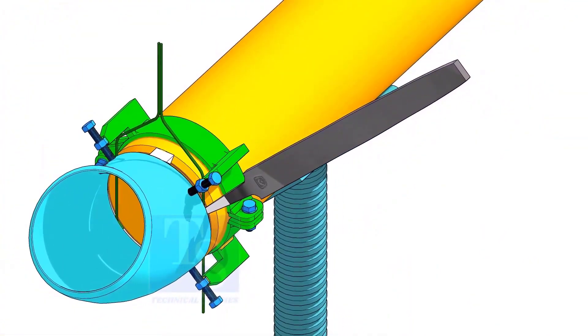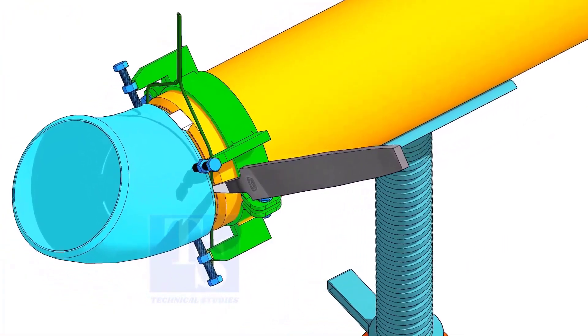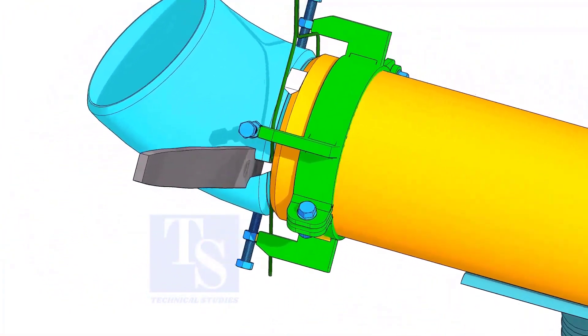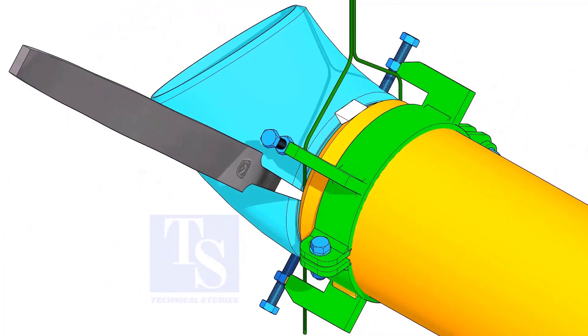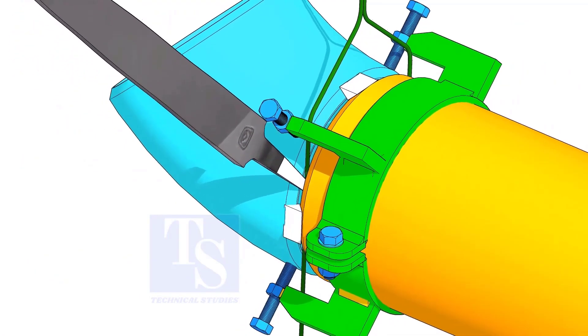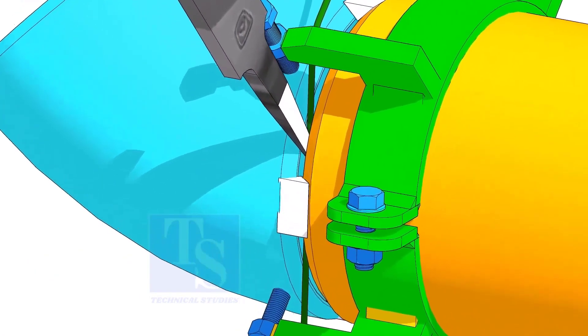You would have observed after a tack weld, the fittings come closer and the gap is reduced. Hold the file end in the joint as shown. This will prevent the fittings from coming closer.